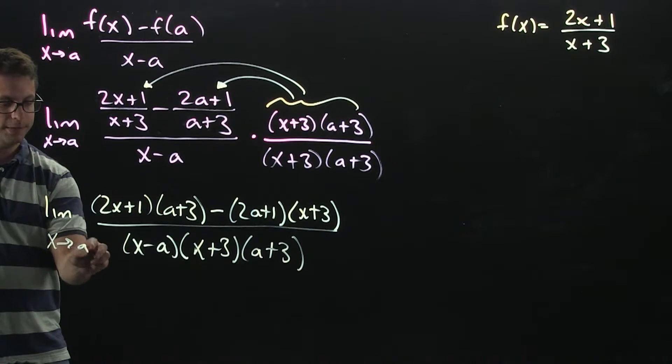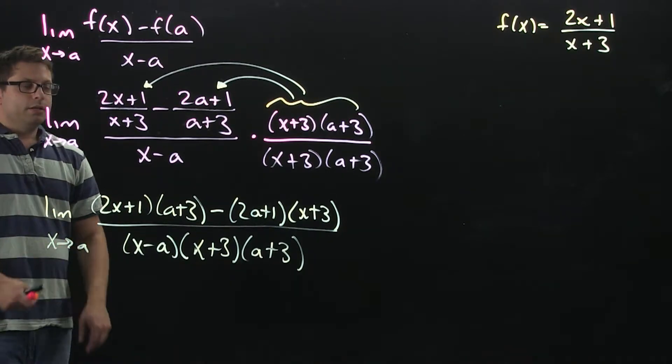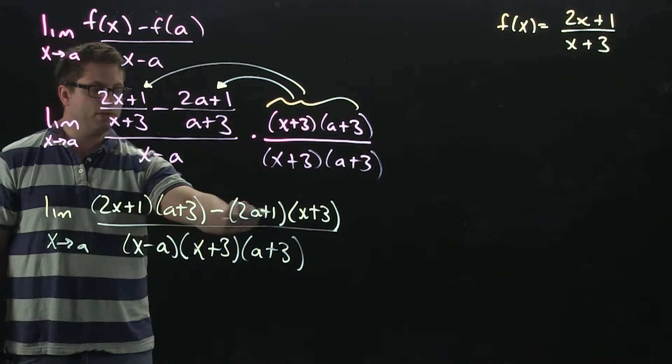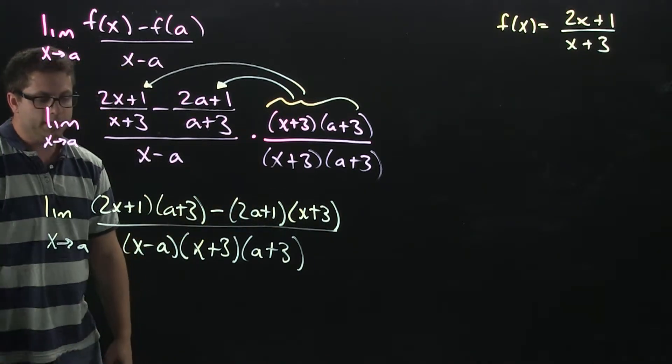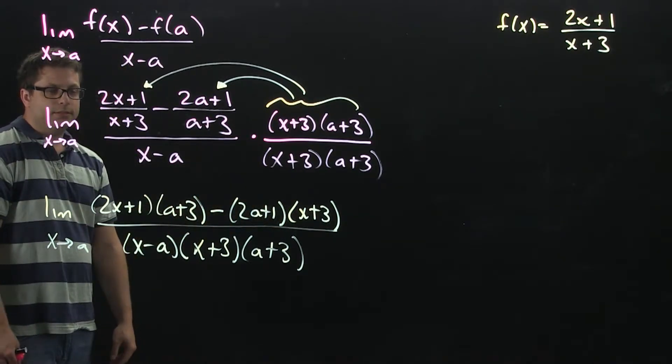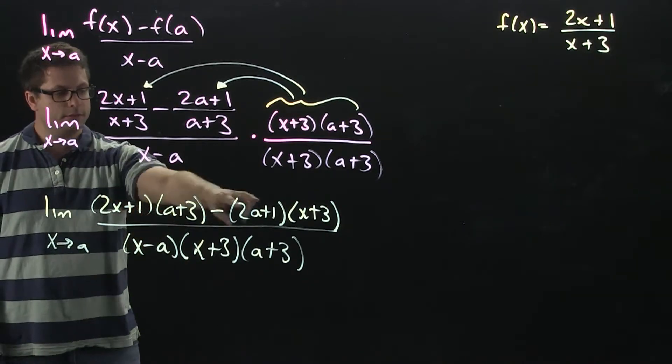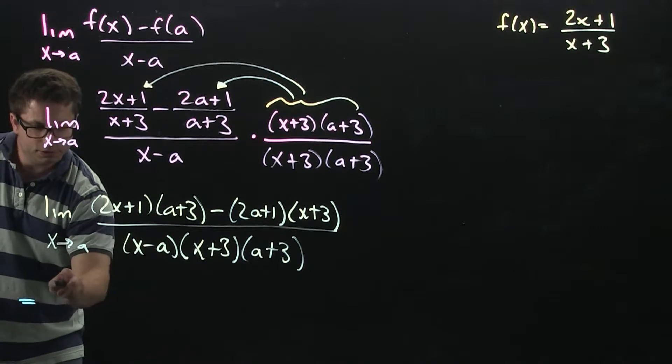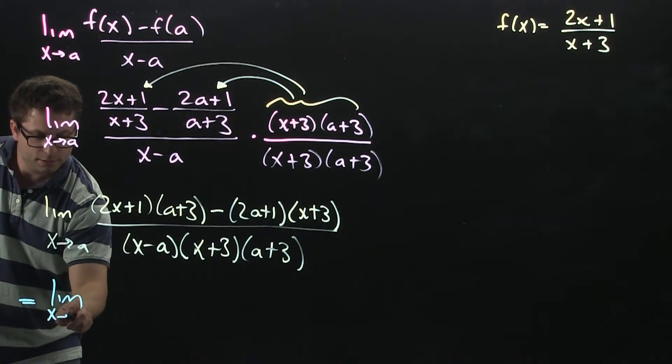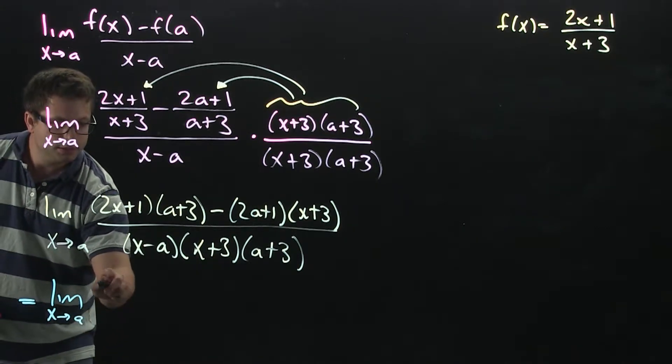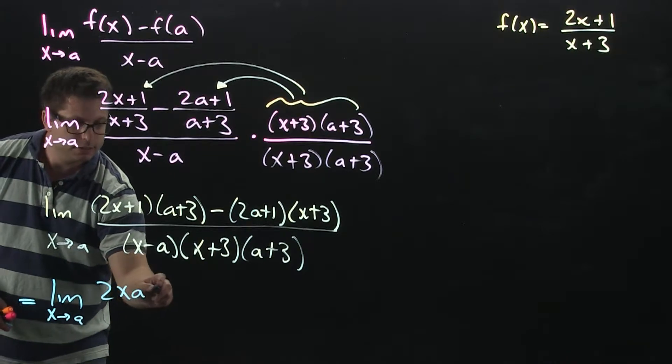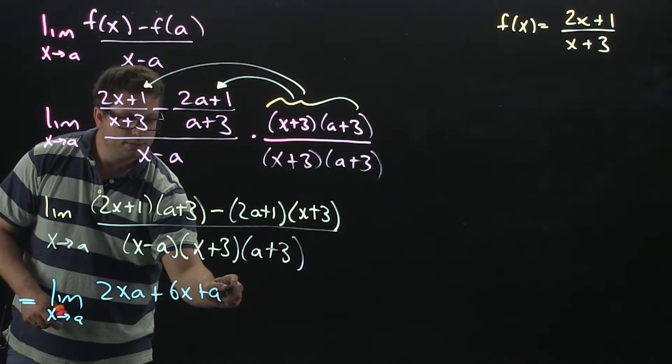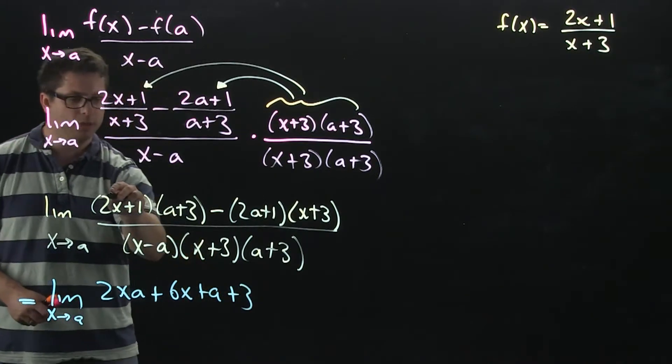Now, again, x is going to approach a. It's not as intimidating as it looks, because when you start simplifying all of this, it does clean up quite nicely. All right. So, let's go ahead and foil these out. Distributing that out, we'll get 2xa plus 6x plus a plus 3. So, that's foiling out these.